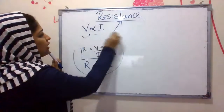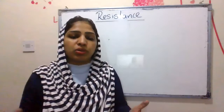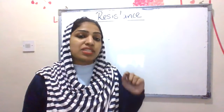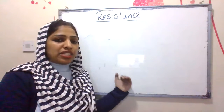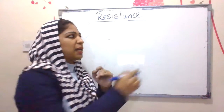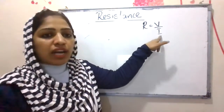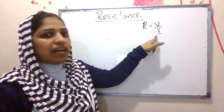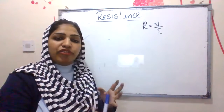This resistance is not going to change because it is a constant. Based on the amount of potential, current will vary. Potential difference is directly proportional to current. Resistance does not depend on V or I. Because R equals V divided by I, and V is directly proportional to I — V depends on I. So R does not depend on V or I.